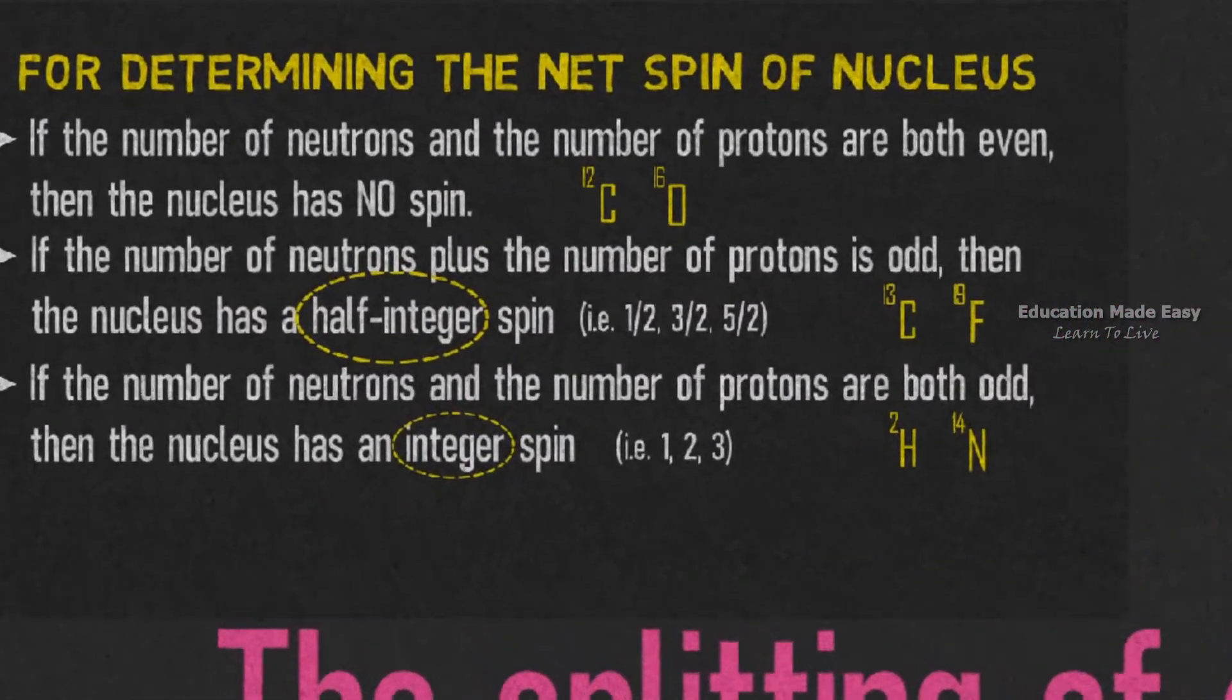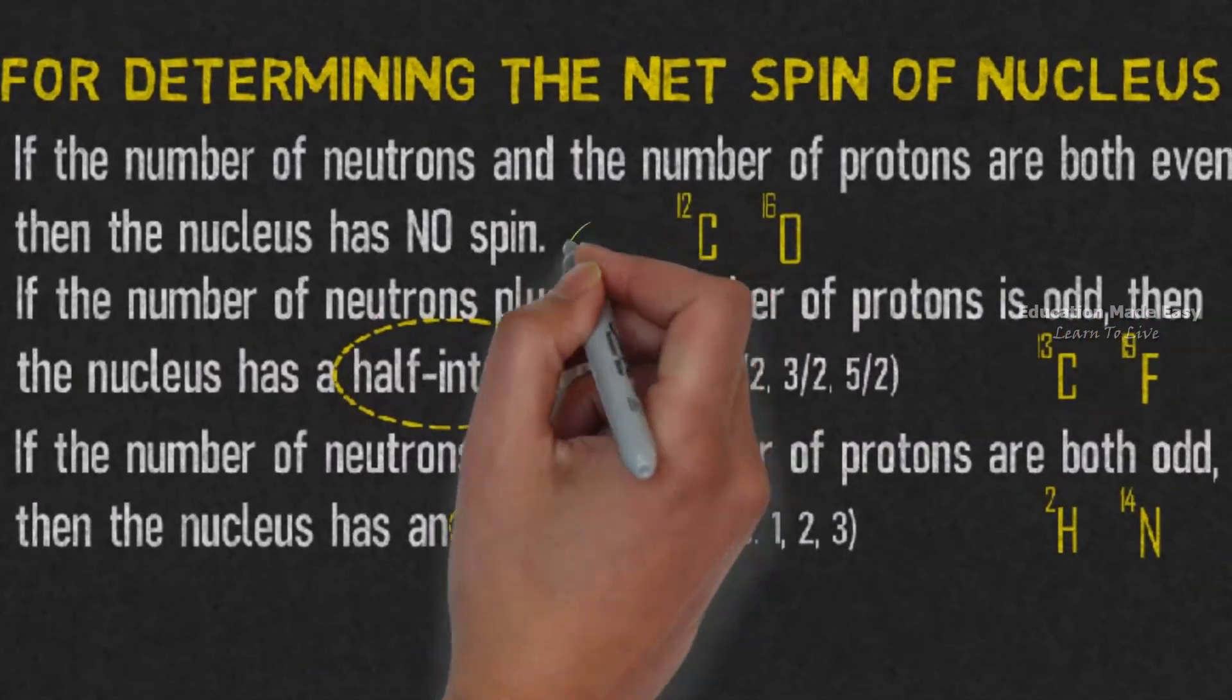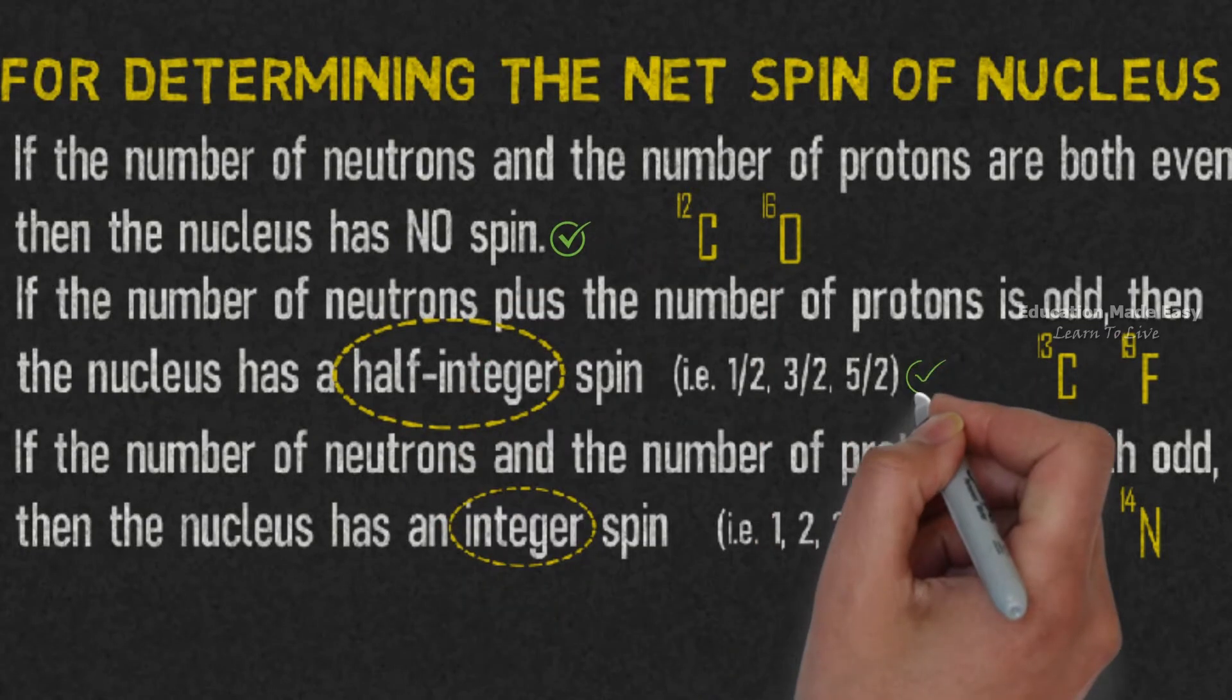We already know how to determine the net spin of the nucleus, which is the value of I using the rules.